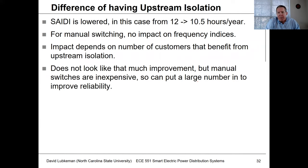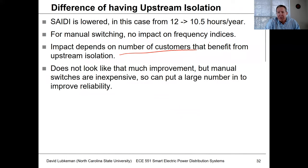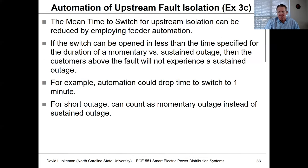This doesn't seem like that much of an impact — going from 12 to 10.5 hours per year. With manual switching, we still haven't improved the frequency index, but we have made a change on the SAIDI side. This impact depends on where customers are actually located. Even though it doesn't seem like much of an improvement, manual switches are relatively inexpensive. A manually operated switch doesn't cost much to put out in the field, so you can afford many locations compared to the cost of a recloser — it's a very economical way to improve reliability.